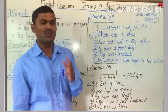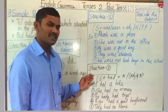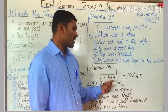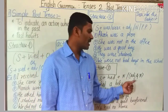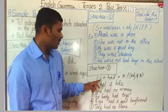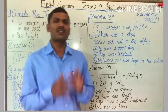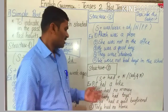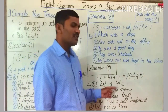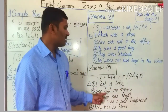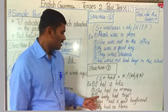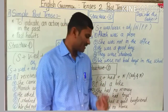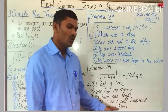The third structure to make sentences in simple past tense is: subject plus had plus noun or adjective plus noun. This formula helps you construct sentences in simple past tense. Examples: 'I had a bike.' 'She had no money.' 'The baby had toys.' 'Rhea had a good boyfriend.' 'They had no home.'